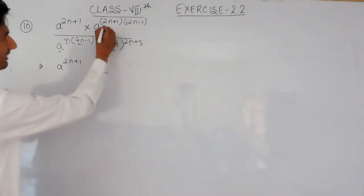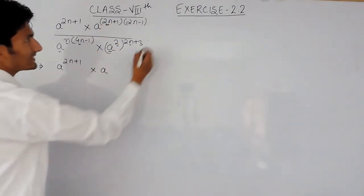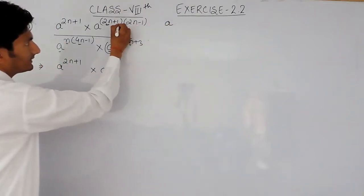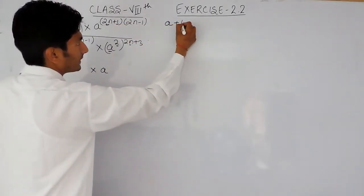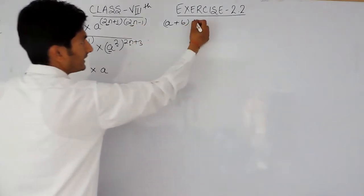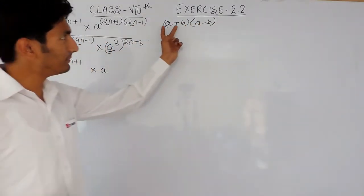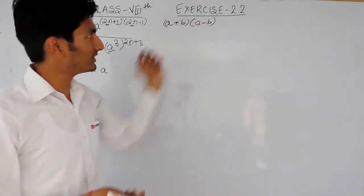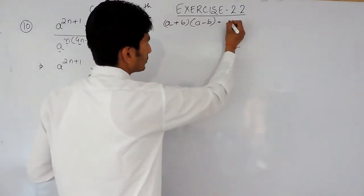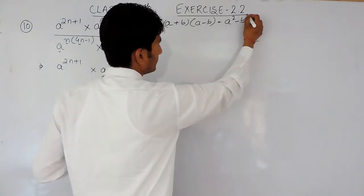Now, if I consider this 2n as a and this as b, so this is a plus b and I consider this as a, so this will be a minus b. And we know that when a plus b is multiplied by a minus b, the result is equal to a squared minus b squared.